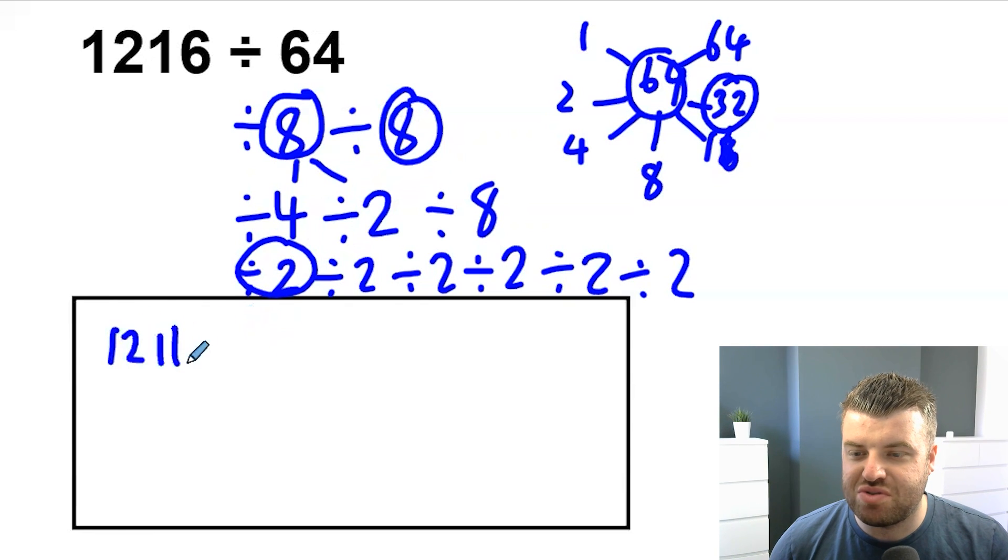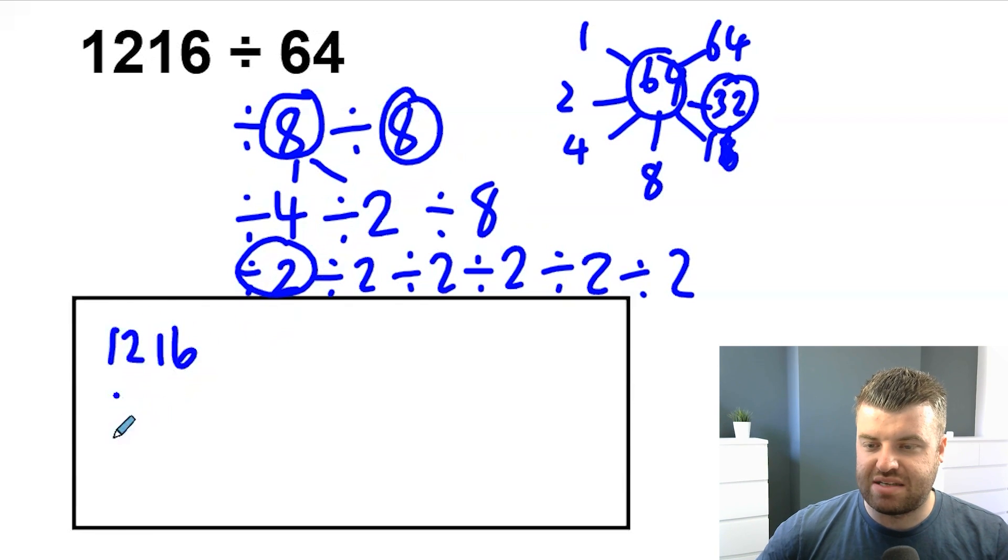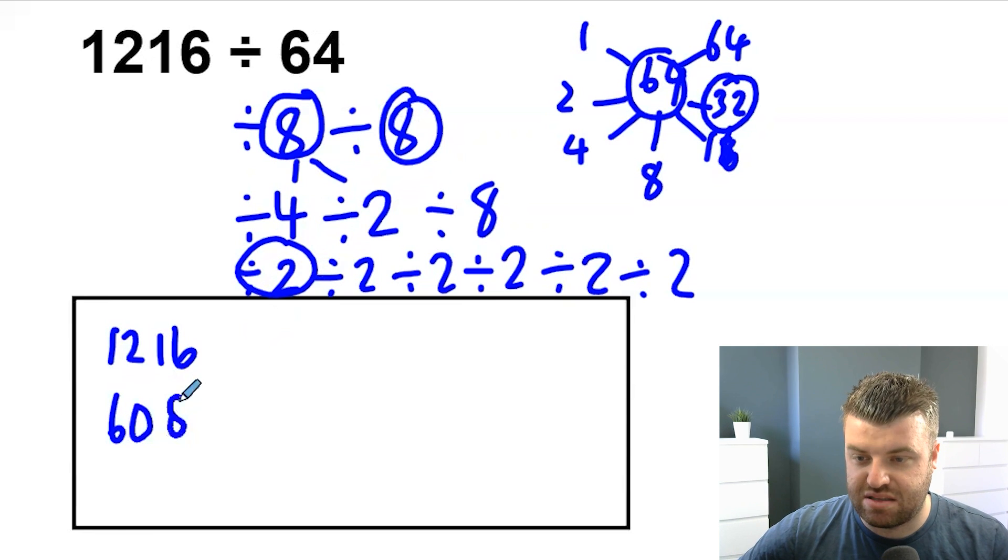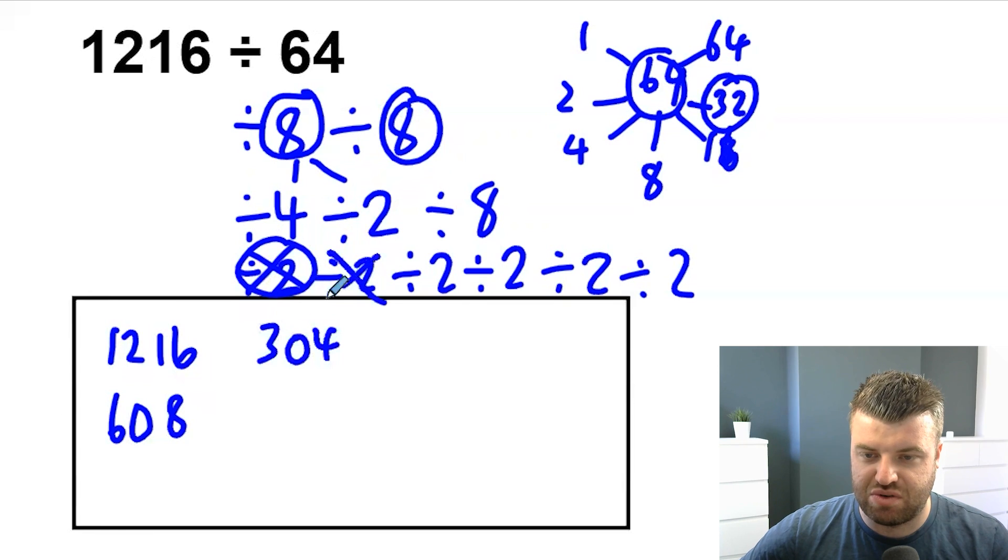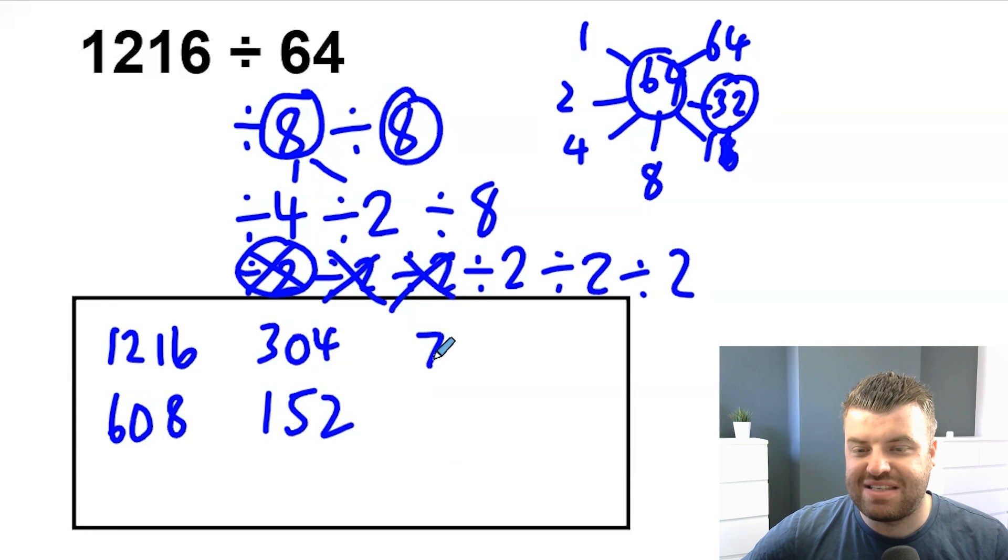So we have 1,216. Let's divide it by 2. So that's 608. Cool. Then divide it by 2 again. 304. Let's cross it off. Divide it by 2 again. 152. Let's cross it off. Divide it by 2 again. We're going to have 76. Cross it off.